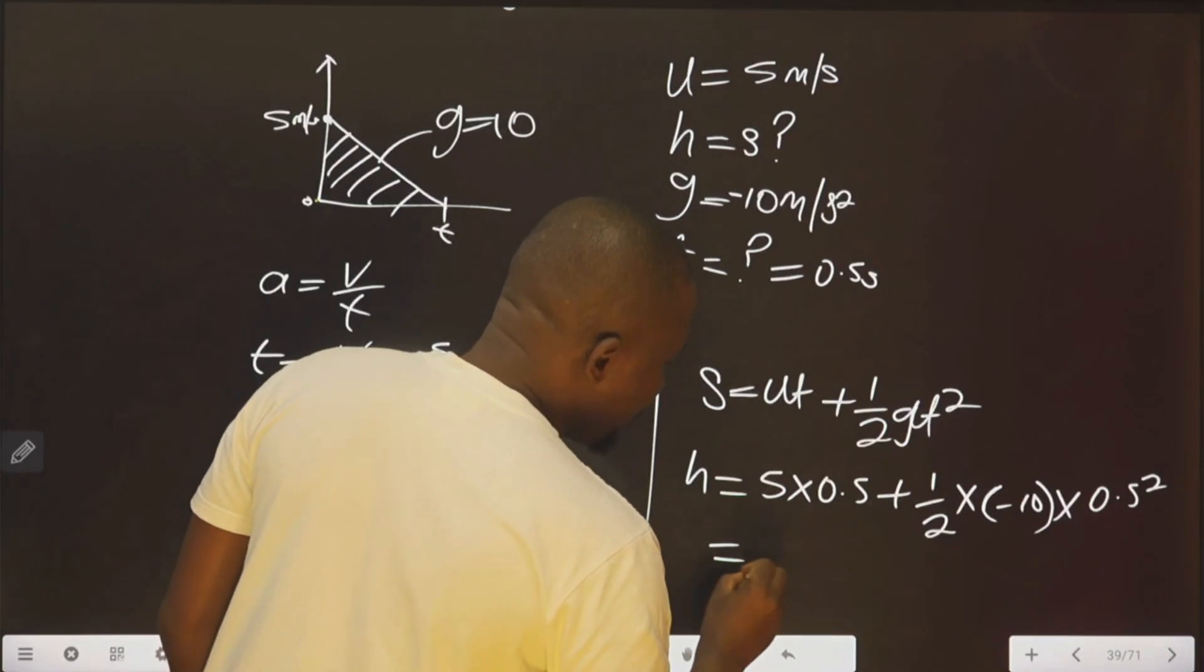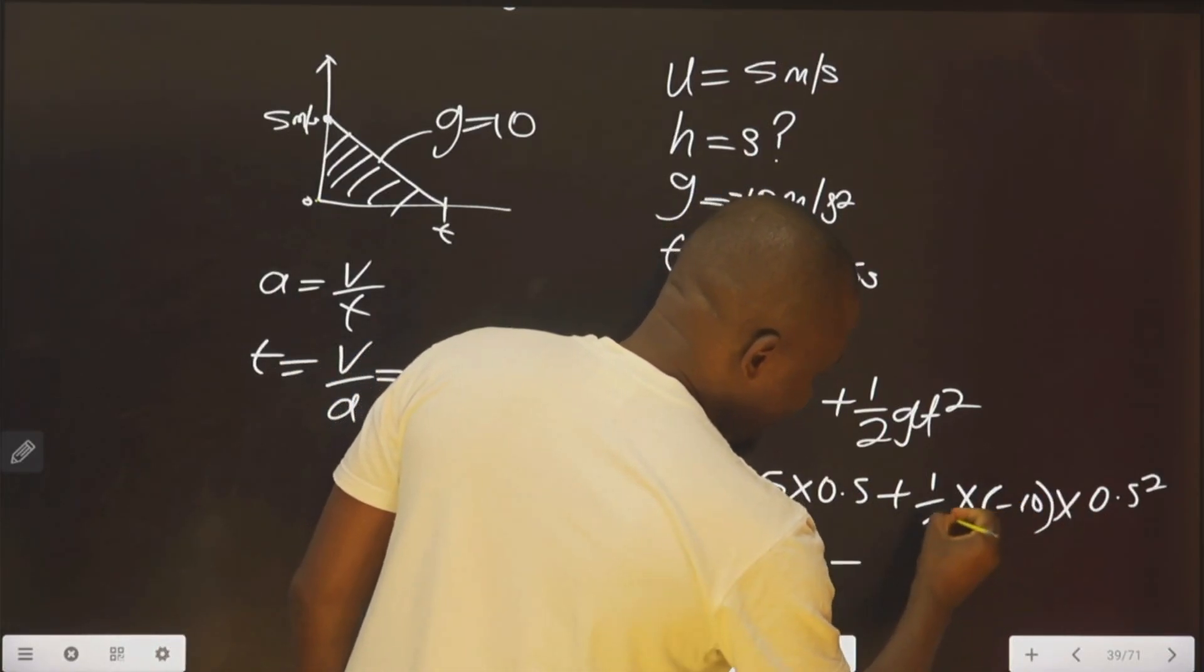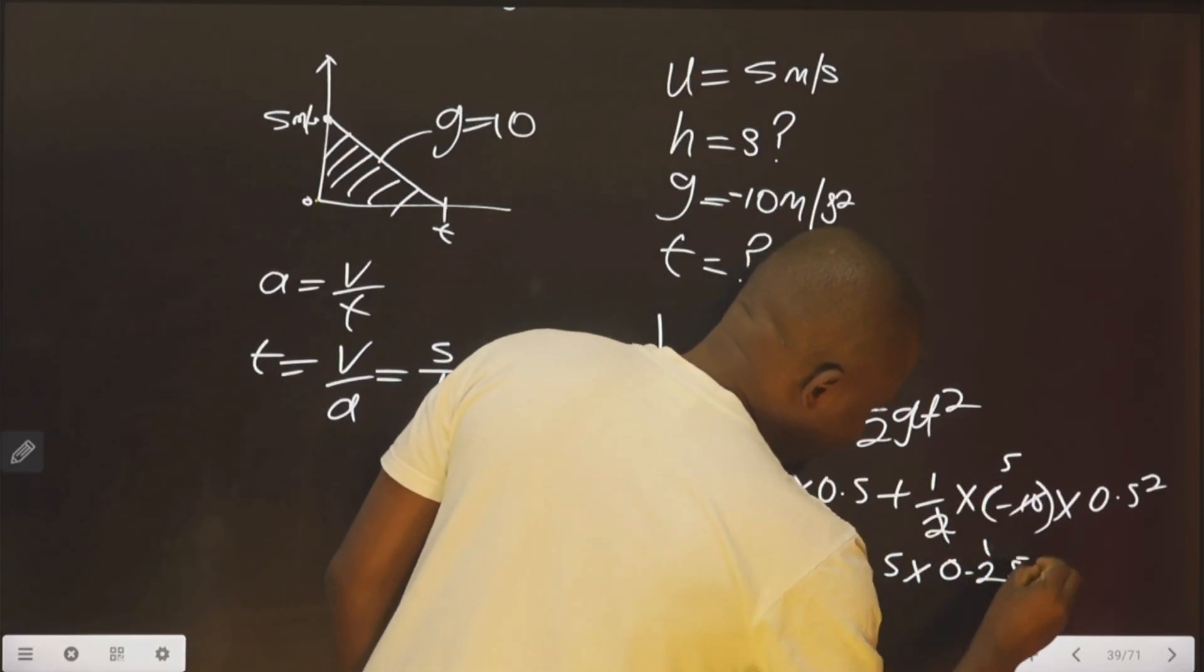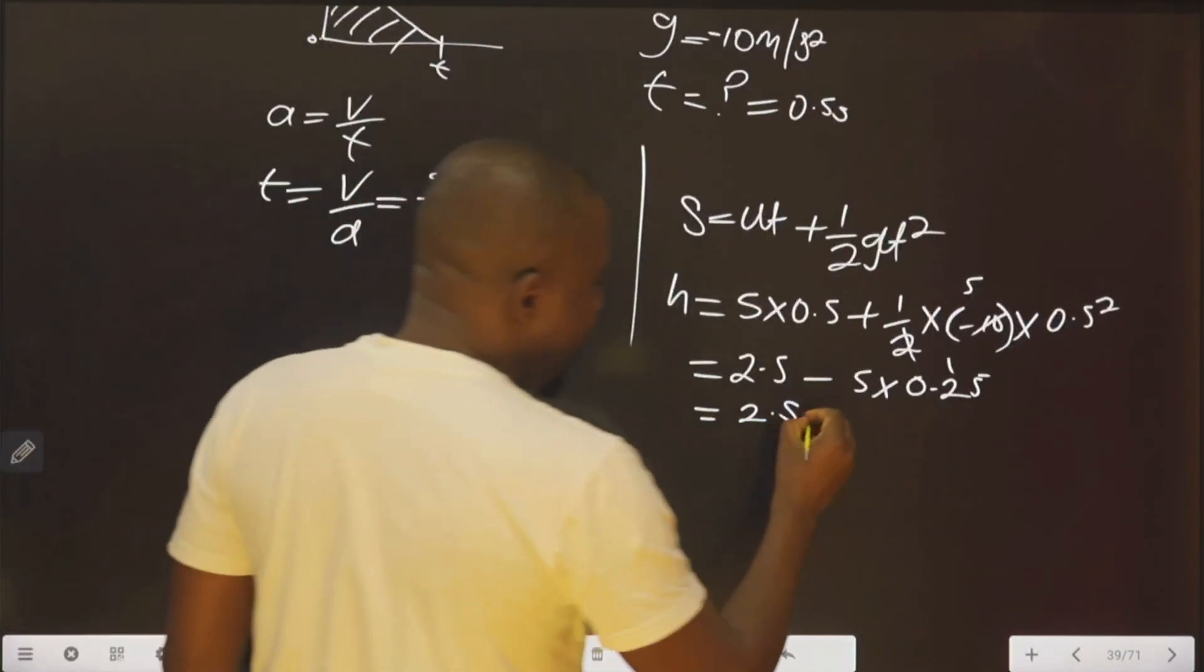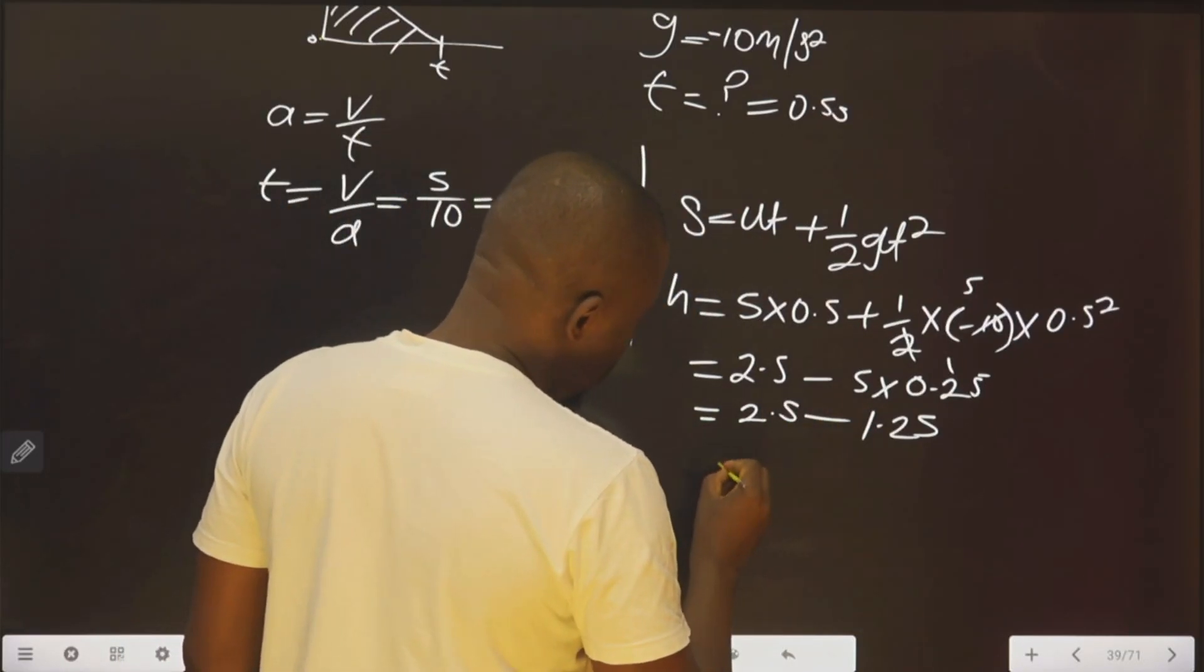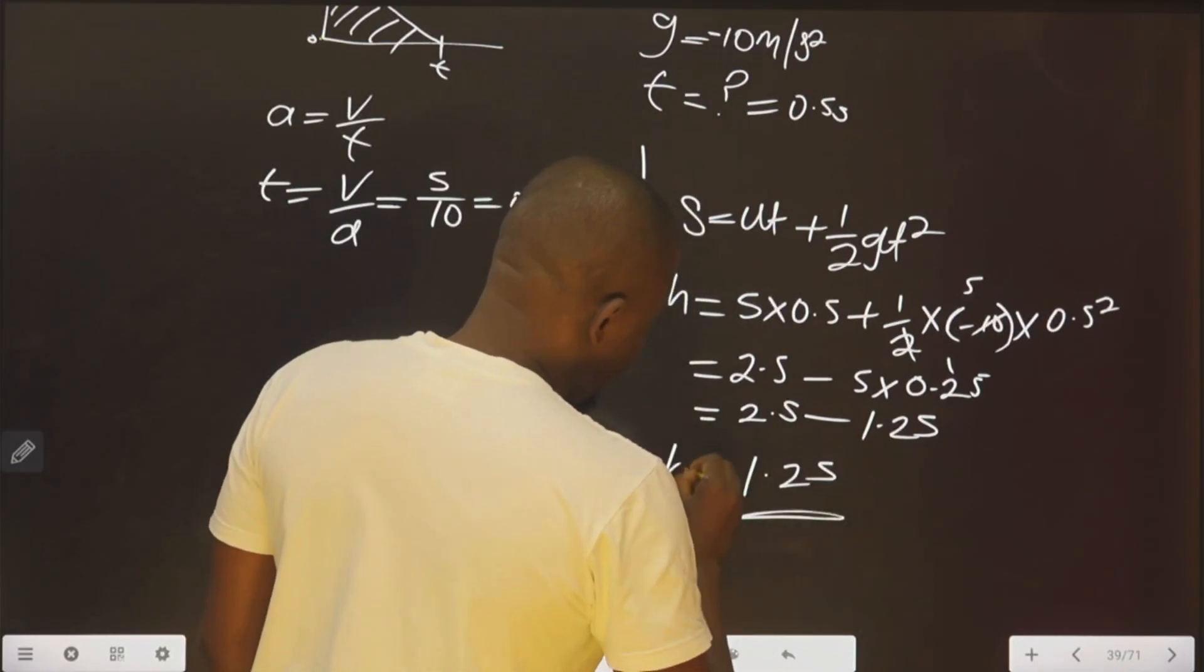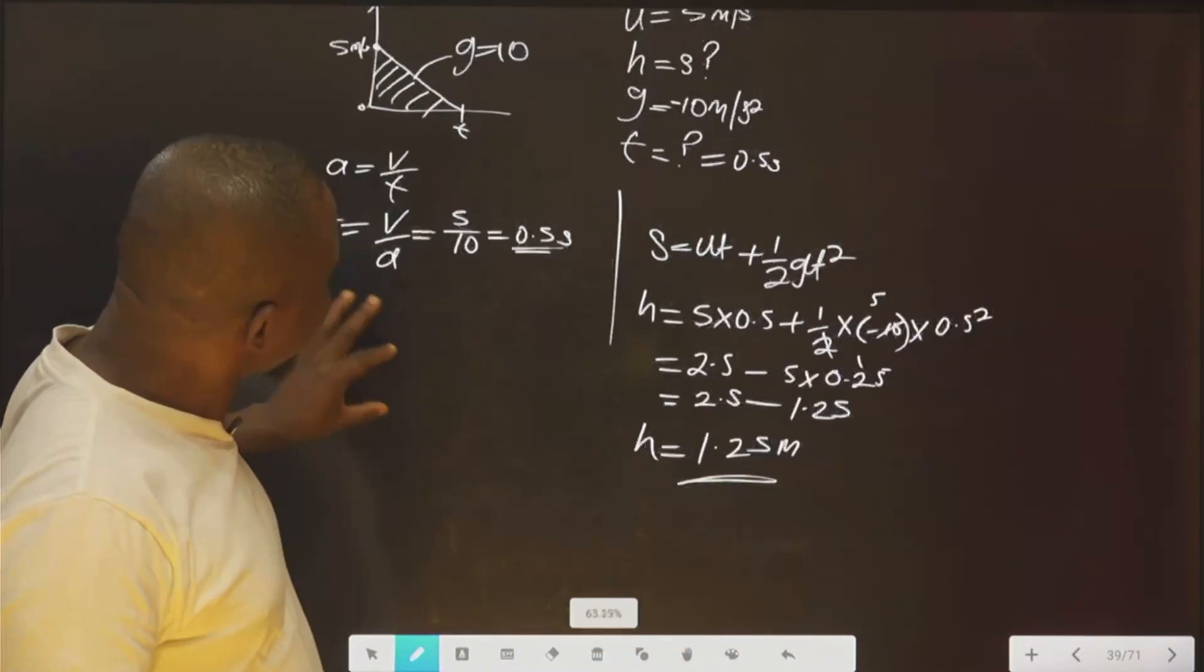This will give us 2.5 minus this is 5, 5 multiplied by 0.25. This is 2.5 minus 1.25. If you work on this now, you agree with me, you are going to have 1.25 meters. This is the height.